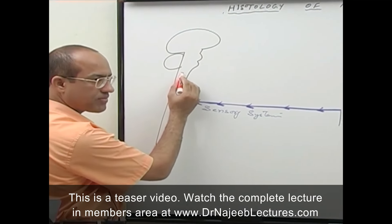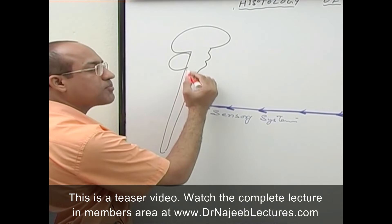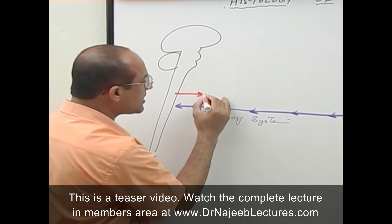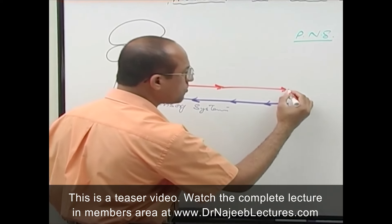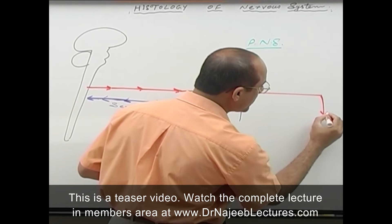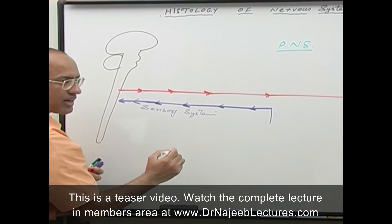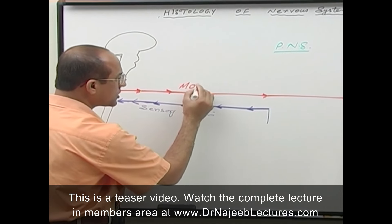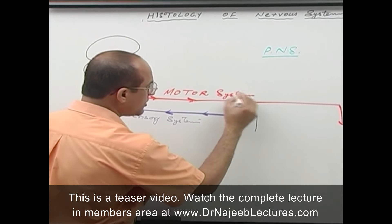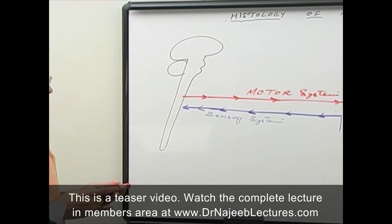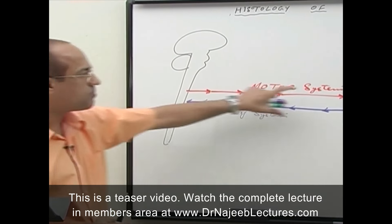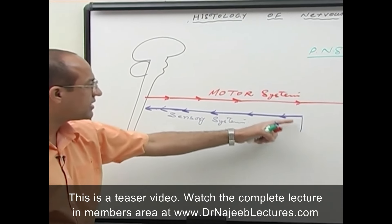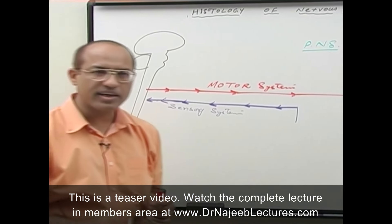Once information goes to the central nervous system, it is recognized, compared with past information, and appropriate responses are generated. The neurons which bring the response from the central nervous system out to the periphery form the motor system. So anatomically, the nervous system is divided into central nervous system and peripheral nervous system. The central nervous system has brain and spinal cord; the peripheral nervous system has a sensory part and a motor part.